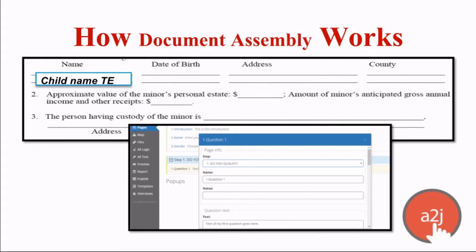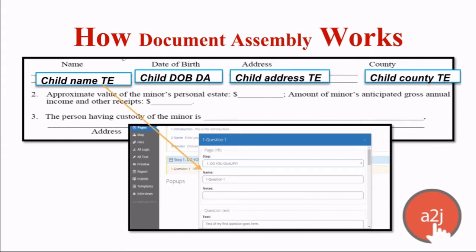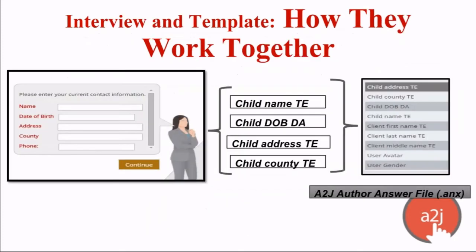That template is created, then those variables are imported into A to J Author, where they're used in the questions that you ask the end user. You take the same variables that are in the template and use them to gather that information from the end user. Whatever they type into the field is saved into that field's variable, and those variables are saved in an answer file.